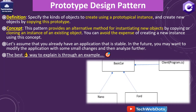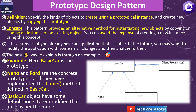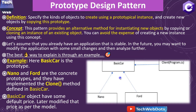Let's understand the example first and then jump into the code editor. We have our BasicCar, which is our prototype, and Nano and Ford are the concrete prototypes. Nano and Ford have implemented the clone method defined in BasicCar. The BasicCar object has a defined price that is later modified as per the model. These two concrete prototypes implement the clone method of BasicCar, and it is used by the client, or the program.cs file.